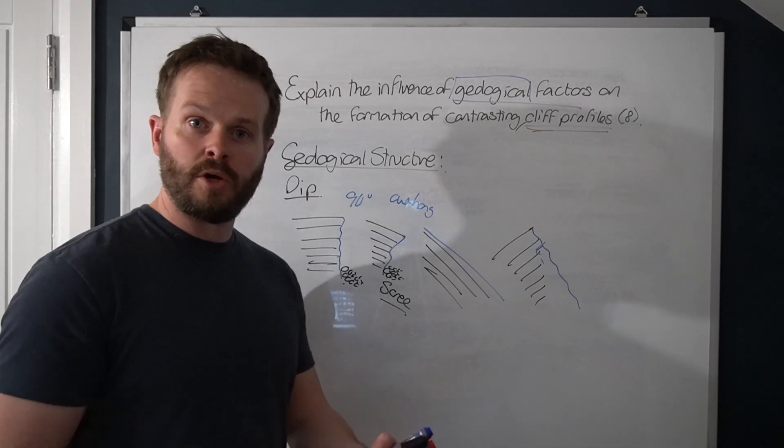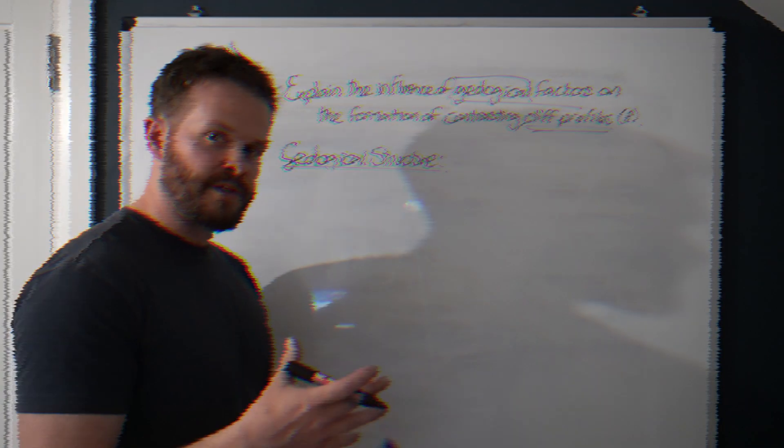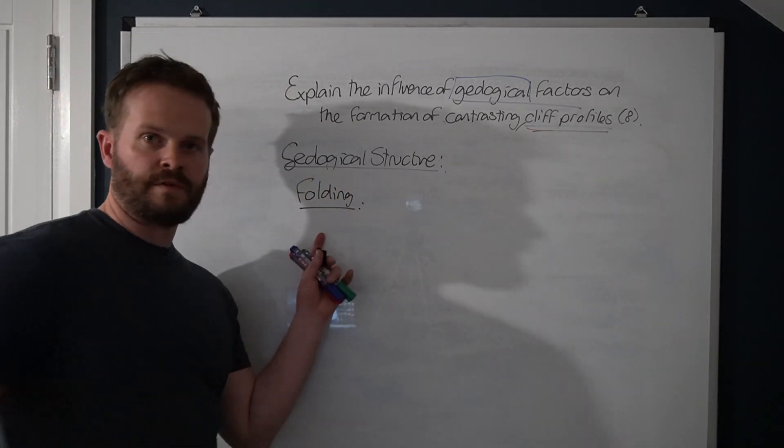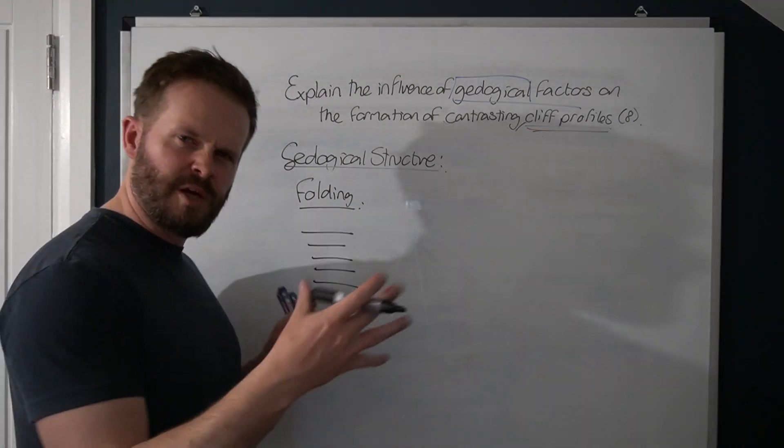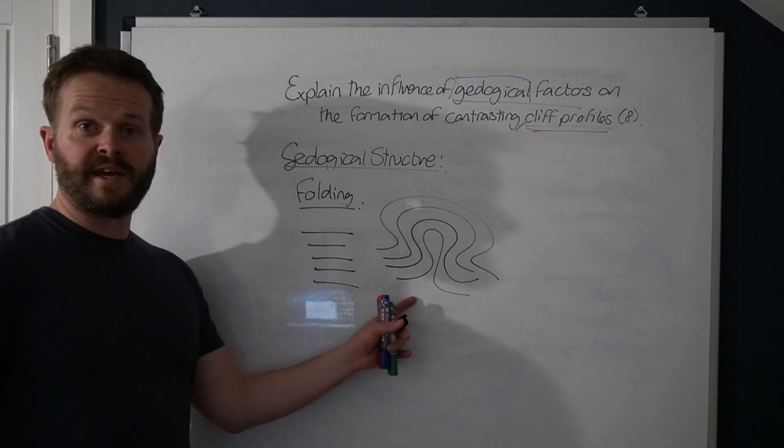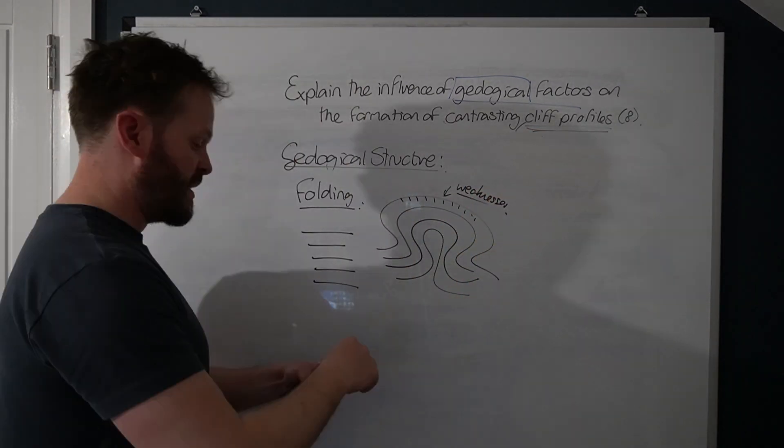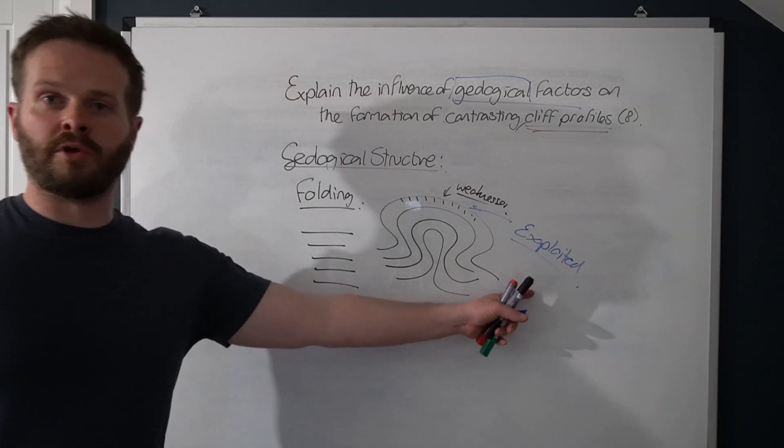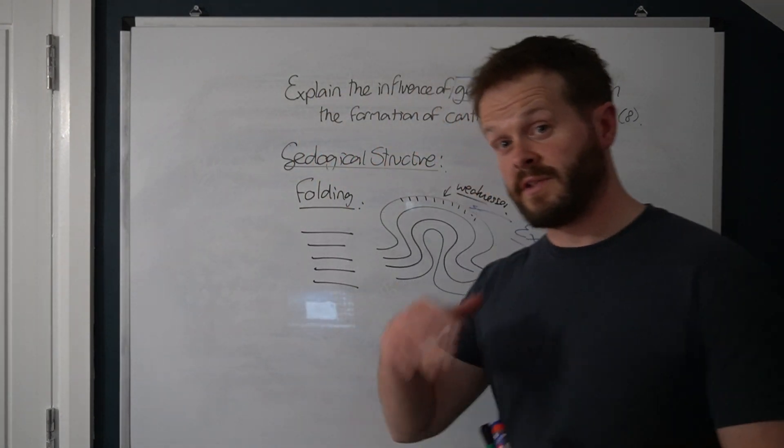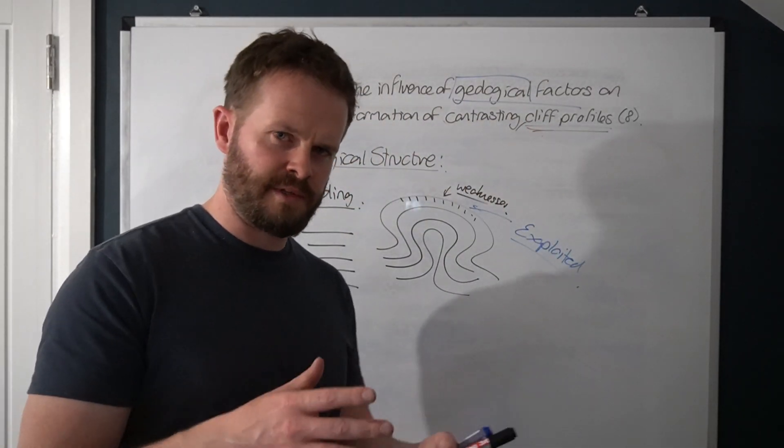So the final paragraph on geological structure is going to be on weaknesses. When we're talking about weaknesses, we can combine it with another element of geological structure. Usually there's weaknesses because of tectonic forces. Now tectonic forces can cause folding. So if we take a bedding plane, if we apply tectonic forces, sometimes what can happen, folding can take place. As you can see there, straight lines become curvy lines. What appears along the curves, we get weaknesses. Now these weaknesses, remember, they can be exploited by wave action. They can be exploited by several processes.